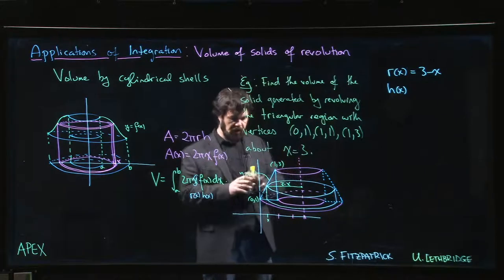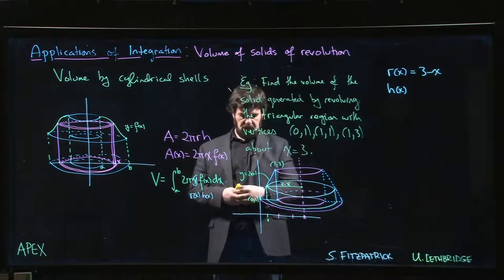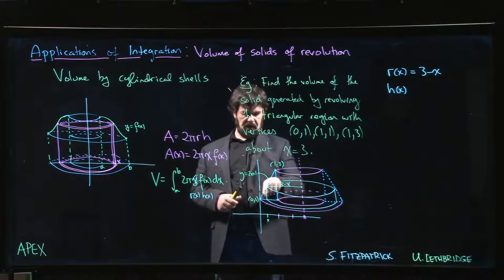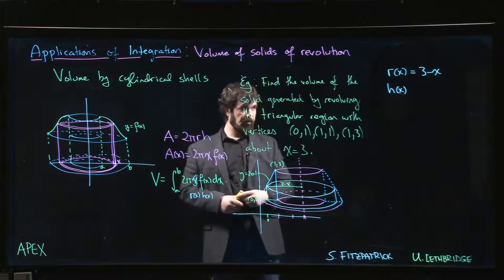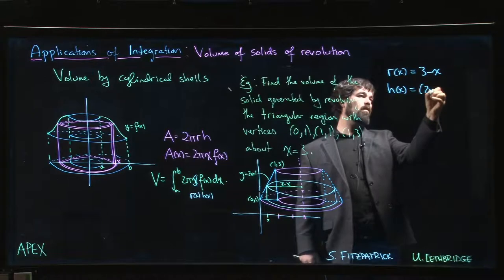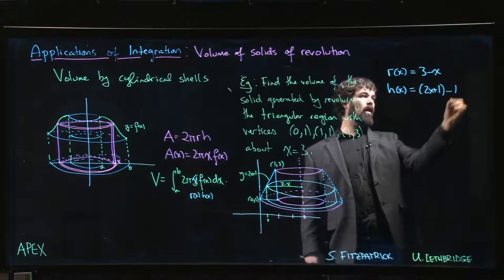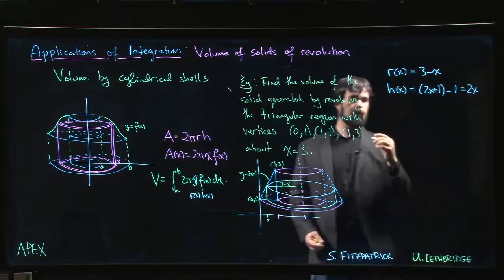But it's not. It's not because this region isn't sitting down on the x-axis. It's up here. So the height is the distance from here to here. It's the distance from 2x plus 1 to 1. So the difference in the y values is 2x plus 1 at the top of the triangle minus 1 at the bottom of the triangle, which is 2x.